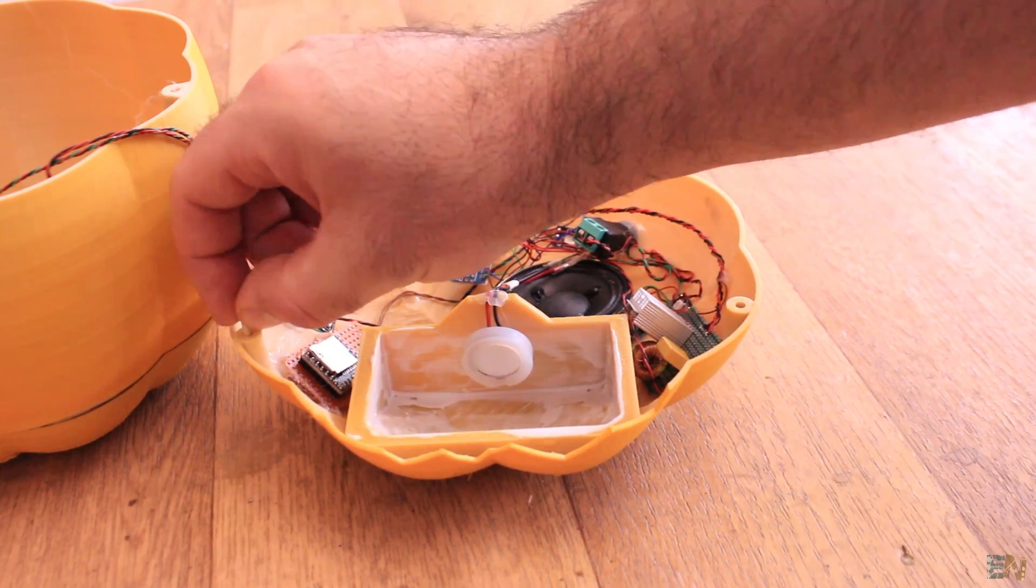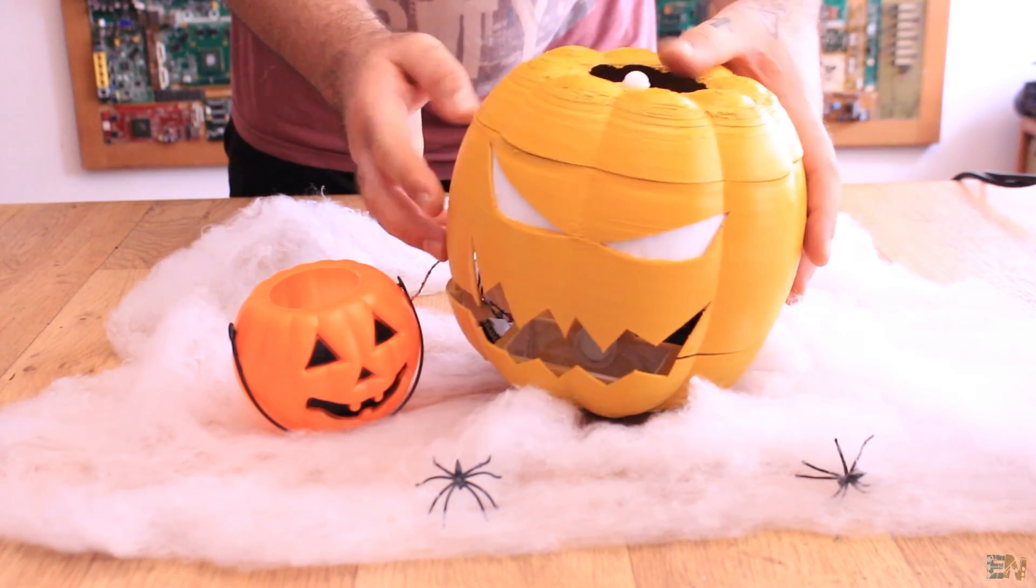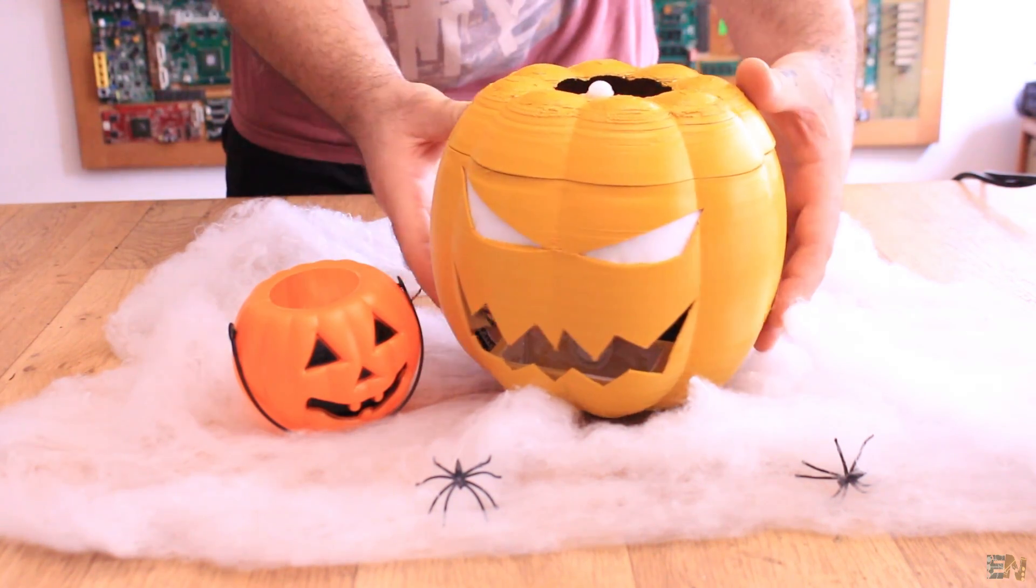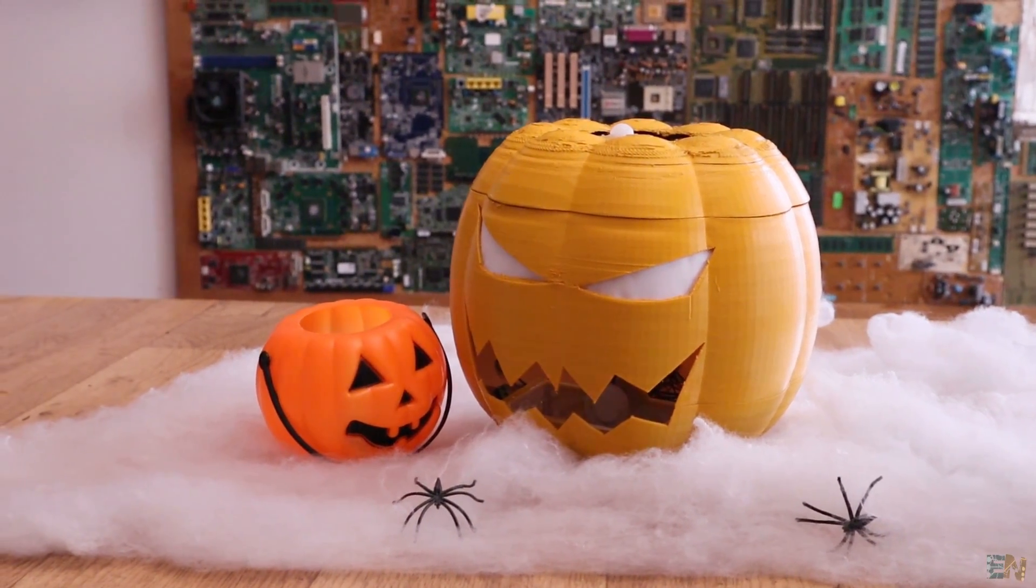So finally, I add another BBQ wood stick and glue the top side of the pumpkin as well. So now I power up the system with 12V DC transformer and give the final test. For that we have 4 examples, so let's see them.